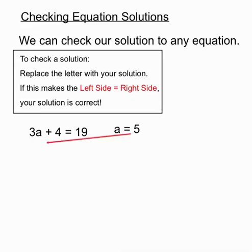We replace the letter with the solution. So instead of an a in 3a plus 4, we'll have 3 lots of 5 plus 4. And we'll calculate the value of that left hand side. 3 lots of 5 is 15 plus 4 is 19.